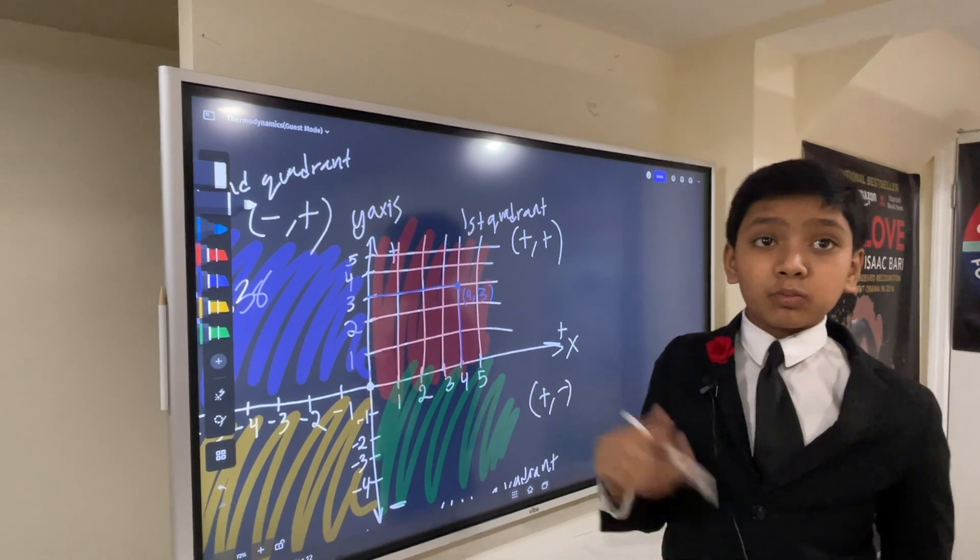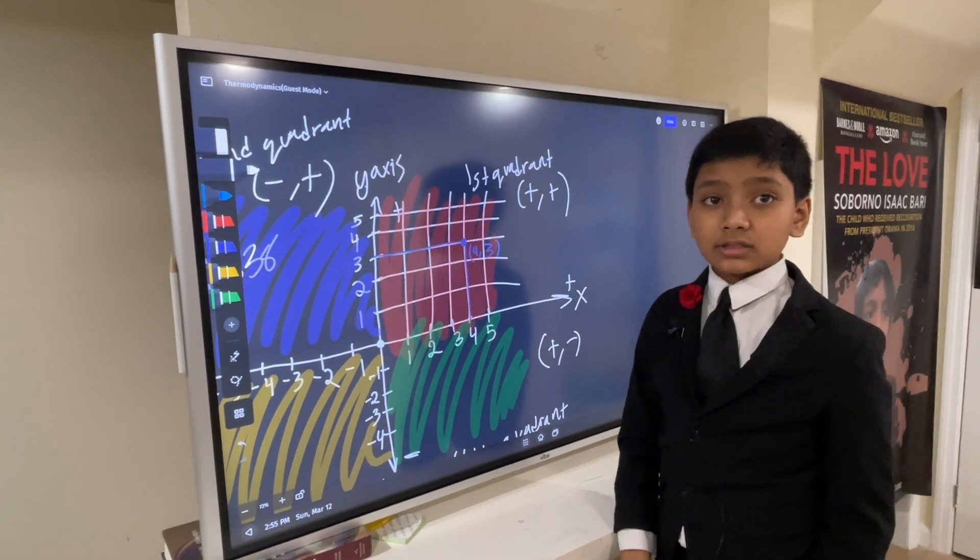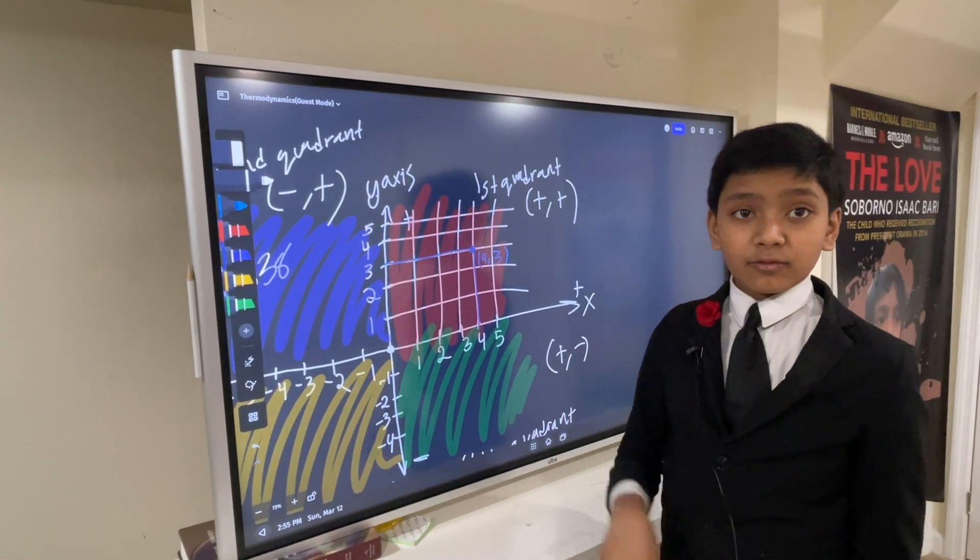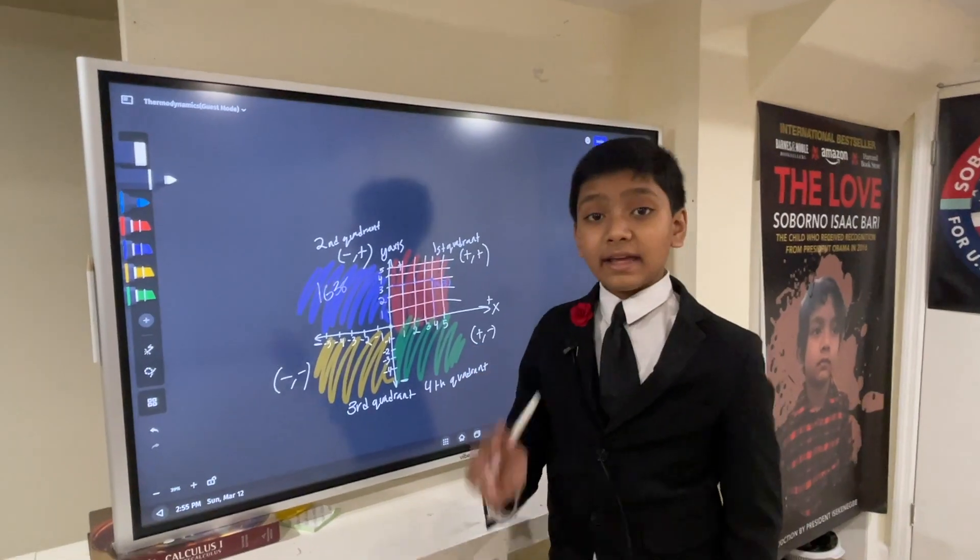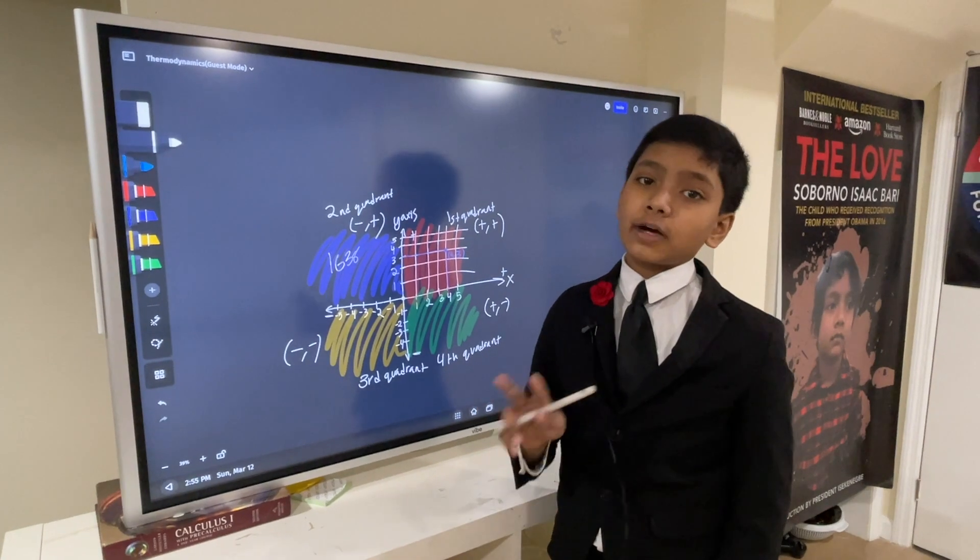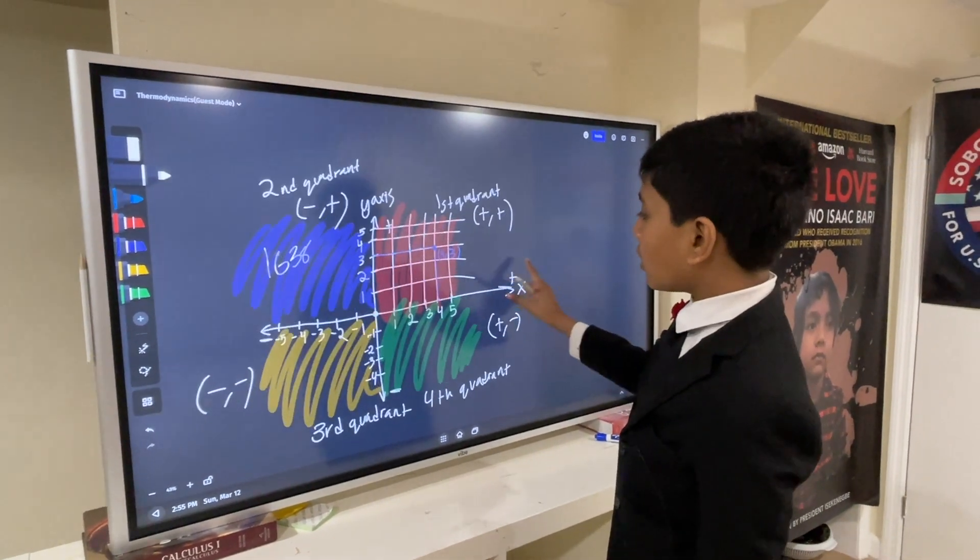So, those are the four quadrants of the coordinate plane. And that's how you could graph points on the coordinate plane. That's basically it for the coordinate plane. Okay. So, now, I'm going to ask you two questions for my exit slide. Number one.